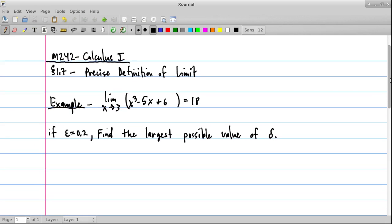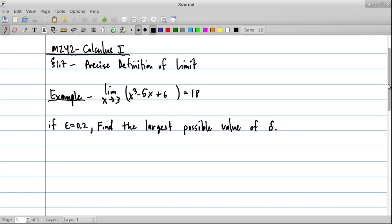So in the example, you're given a limit and you're told that it exists and what the answer is. So the limit as x approaches 3 of x cubed minus 5x plus 6 should equal 18. And you can plug in and check that that's true, that you actually get what it claims you should get.